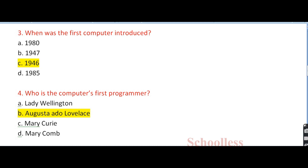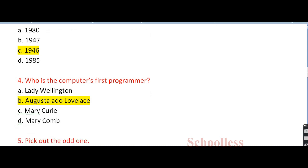Question number 4: who is the computer's first programmer? Options: Lady Wellington, Augusta Ada Lovelace, Marie Curie, Mary Combs. The answer is choice B, Augusta Ada Lovelace, who was the first computer programmer.